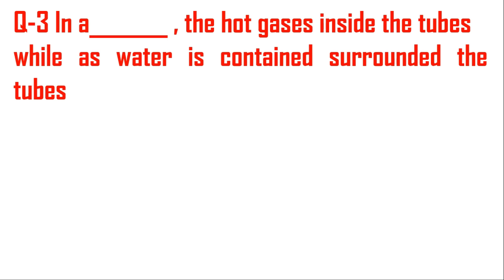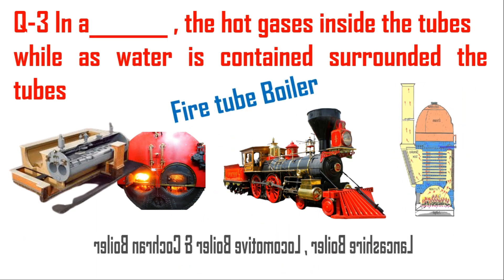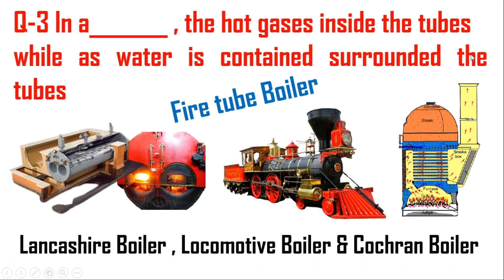Question number three: in a fire tube boiler, hot gases are inside the tubes while water surrounds the tubes. In the fire tube boiler, combustion takes place inside the tubes and the hot gases flow inside the tubes with water surrounding them. Lancashire boiler, locomotive boiler, and Cochran boiler are examples of fire tube boilers. In a Cochran boiler, combustion takes place in the furnace connected to the fire tubes — the red arrow represents the flow of hot gases inside the tubes, with water surrounding them.